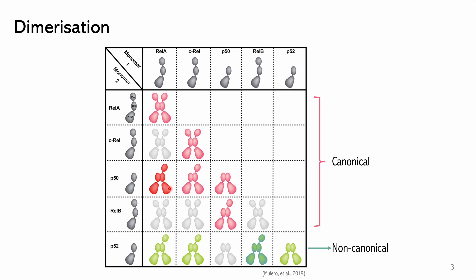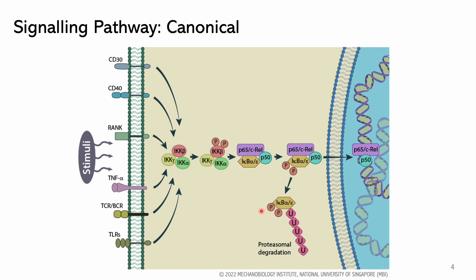P50/RelA and P52/RelB are the major pairs for each pathway. In the canonical pathway, the dimer forms a complex with IκB proteins. When a signal arises, IκB kinase is phosphorylated, and it will then phosphorylate IκB leading to its ubiquitination. This releases the dimer into the nucleus.